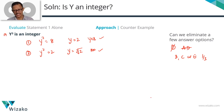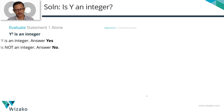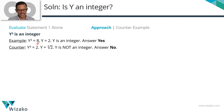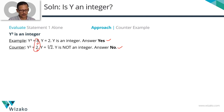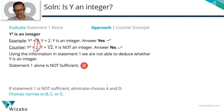To summarize before moving to statement 2: we evaluated statement 1 using counter-examples. When y cube equals 8, the answer is yes — y is an integer. When y cube equals 2, the answer is no. In both cases y cube is an integer, so statement 1 does not give us a definite answer. Statement 1 alone is not sufficient. We eliminate A and D, leaving B, C, or E.